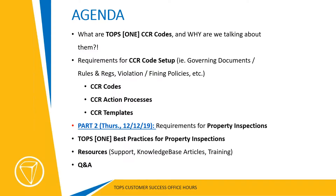The agenda for today's webinar is: first and foremost, what are TOPS One CC&R codes and why are we talking about them? What are the requirements for CC&R code setup? You will need your governing documents, rules and regs, enforcement violations, architectural policies, and so on to get these set up in TOPS One. Within each CC&R code we'll talk about the code setup itself, including action processes and templates. Part two will be more in-depth on the property inspection side.